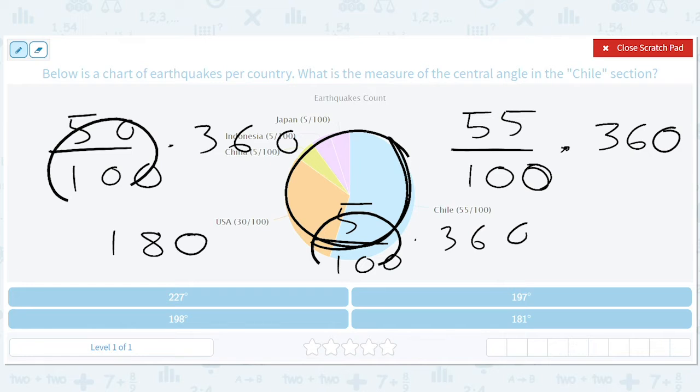But five over 100 is just going to be 5%, right? And 5% is, I mean, what I'm saying is, it's going to be 18. If 50 over 100 times 360 is 180, then five over 100 times 360 is just 18. So when you add 180 and 18, you get 198.